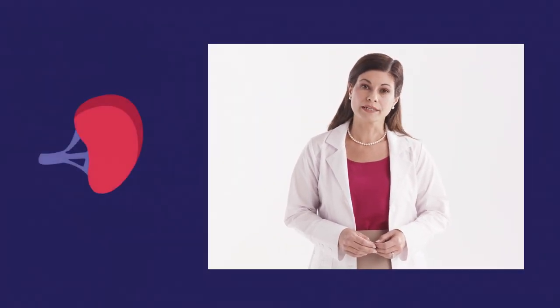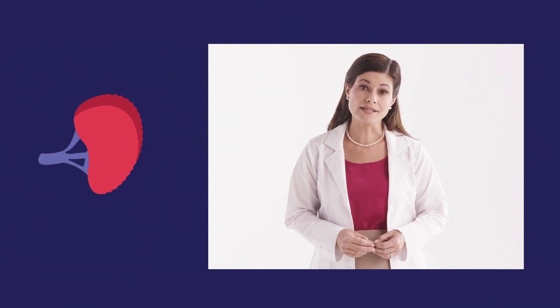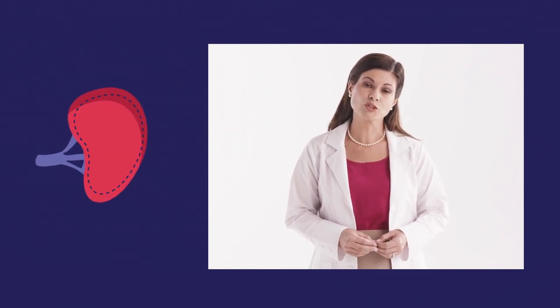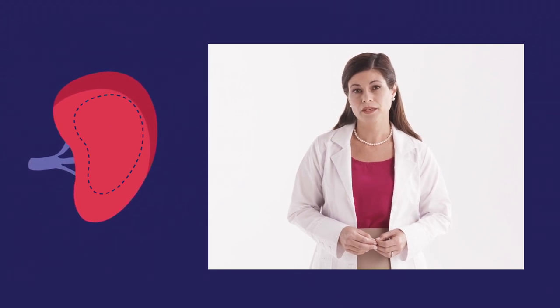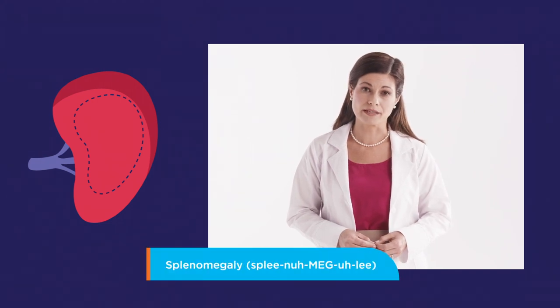In addition to blood counts and symptoms, spleen size is another aspect of your PV that we can track to monitor how your condition may be changing over time. If you have PV, your spleen may become enlarged. This is called splenomegaly.